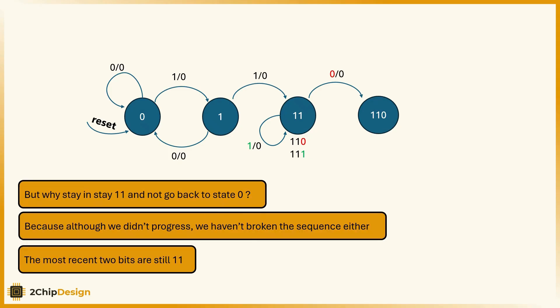But why stay in state 11 and not go back to state 0? Because although we didn't progress, we haven't broken the sequence either. The most recent two bits are still 11.